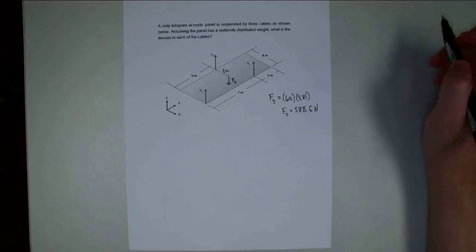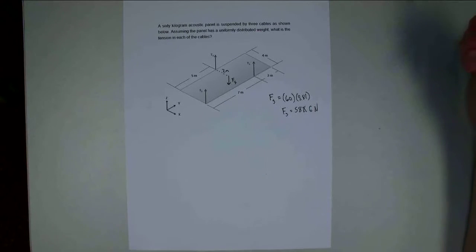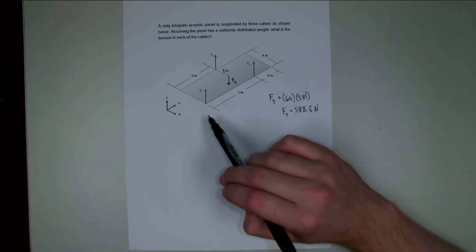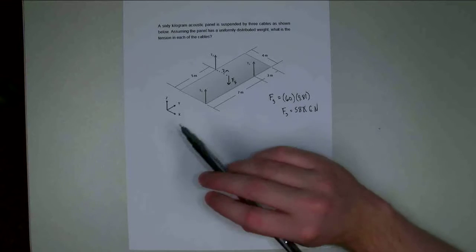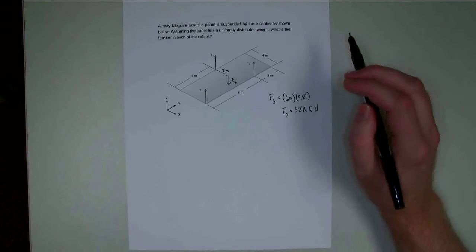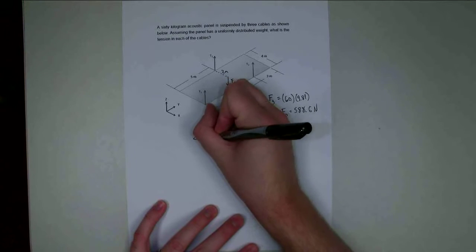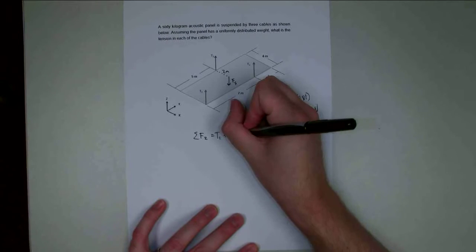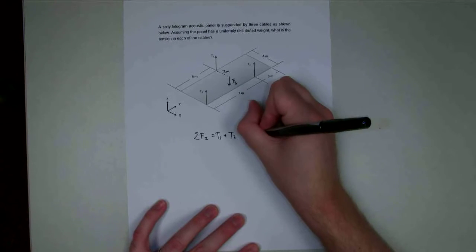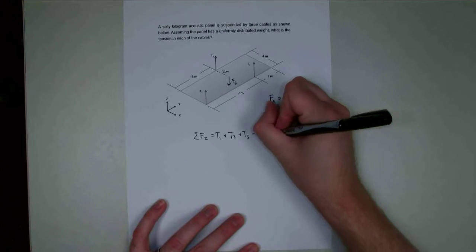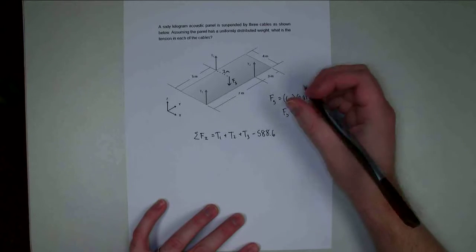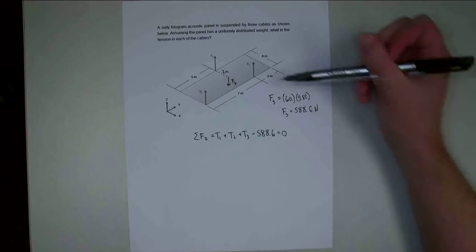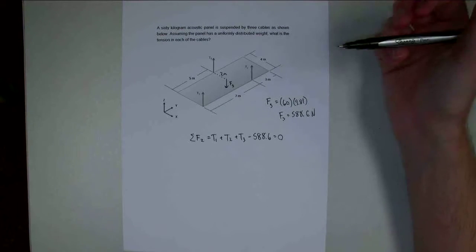I need to figure out what equilibrium equations will be useful. In the x direction, I have no forces. In the y direction, I have no forces. In the z direction, I have all of my forces. So the sum of forces in the z direction is going to be T1 plus T2 plus T3 minus 588.6 equals zero. That's one equation with three unknowns — the three tension forces — so I need three equations total.